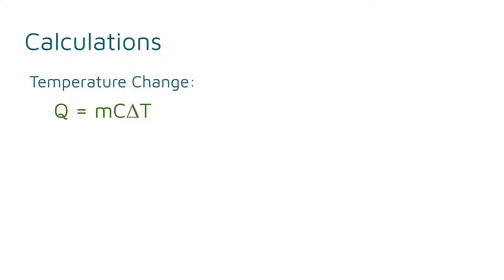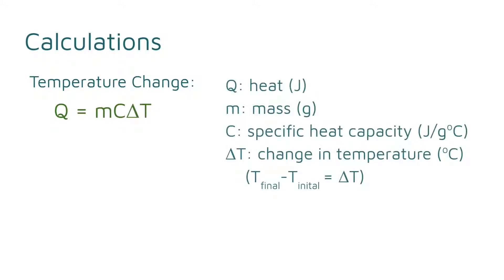For temperature change, you use this formula: Q equals mass times specific heat capacity times delta T. Q is heat, which uses the units joules. Mass is in grams. C stands for the specific heat capacity, in joules over grams times degrees Celsius. This is a constant — it will change depending on the substance. It tells you how much energy is needed to take one gram of a substance and raise its temperature by one degree Celsius.